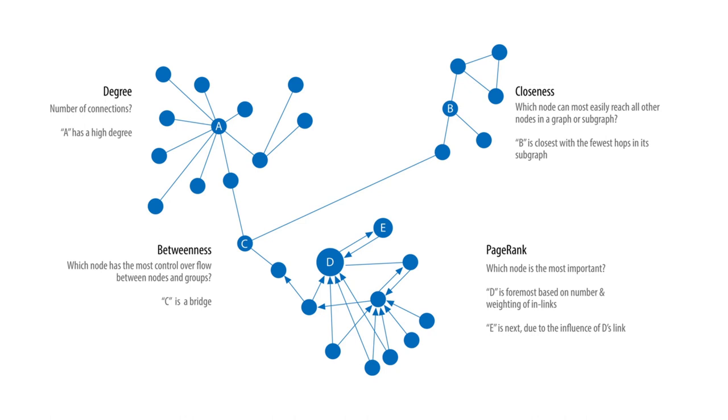Or perhaps what we're interested in is finding which node has the most control over flow in a graph, or perhaps it's the transitive importance of a node that's important to us. So let's go through those one by one.